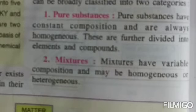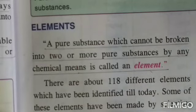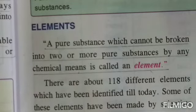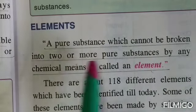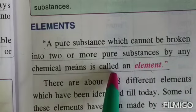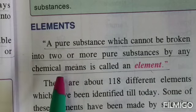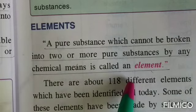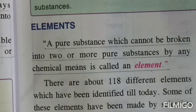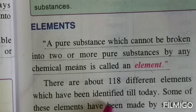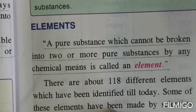Now we see the classification of pure substances further. Pure substances are further divided into elements. A pure substance which cannot be broken into two or more pure substances by any chemical means is called an element. To understand this better, take any word — suppose the word 'book.' I can break it into B, O, O, and K. But can you further break B, O, or K into anything simpler? No, it is not possible.